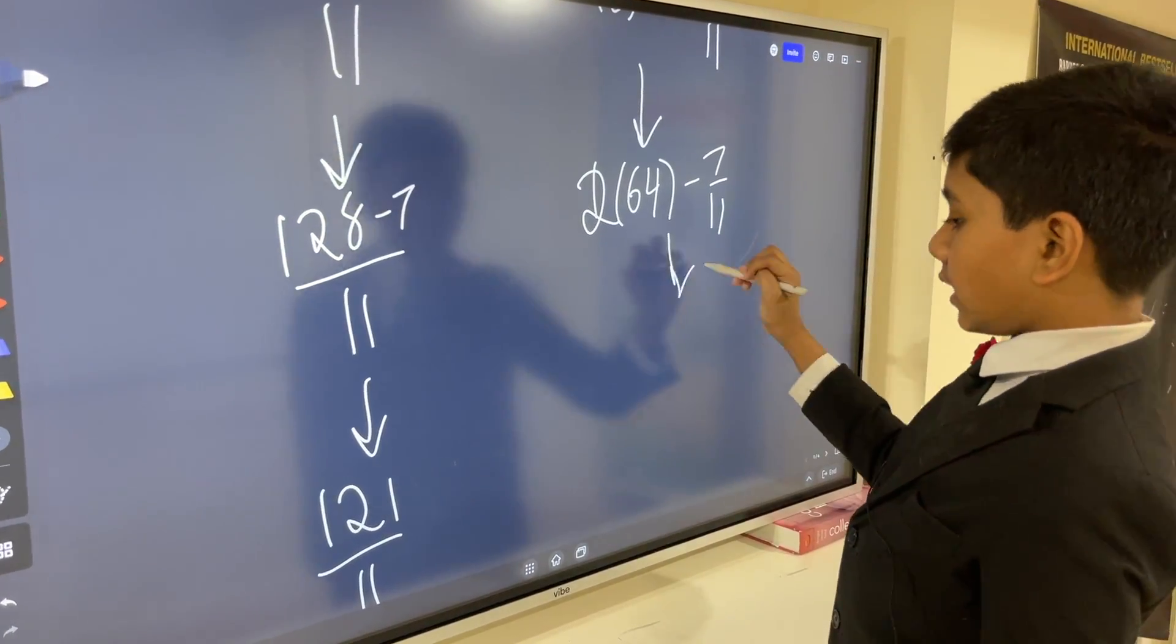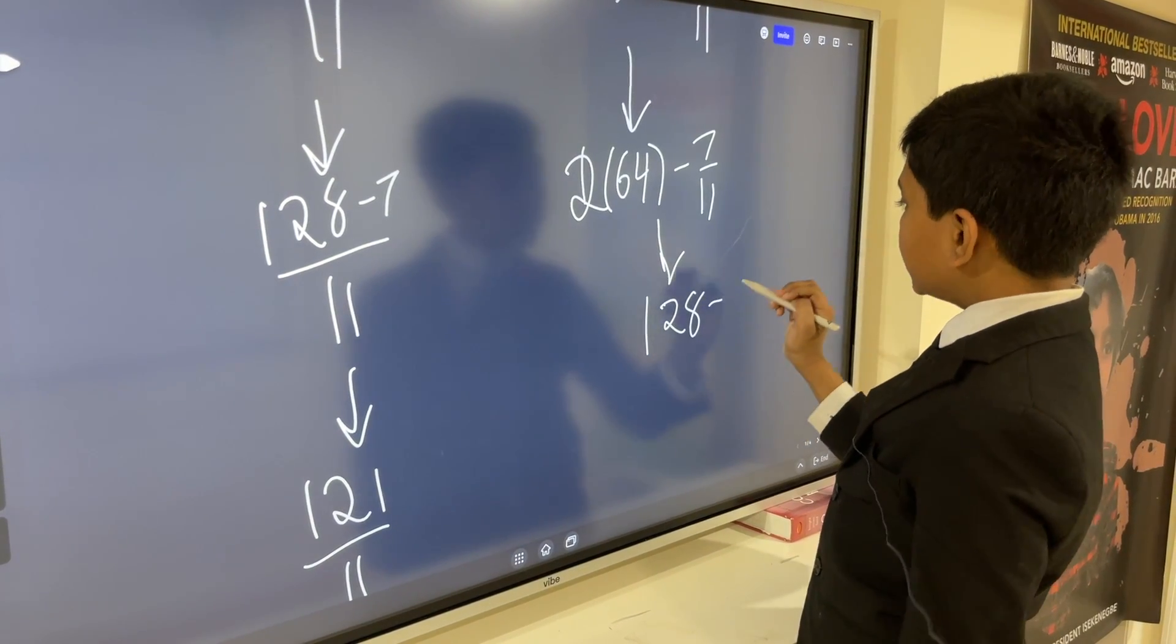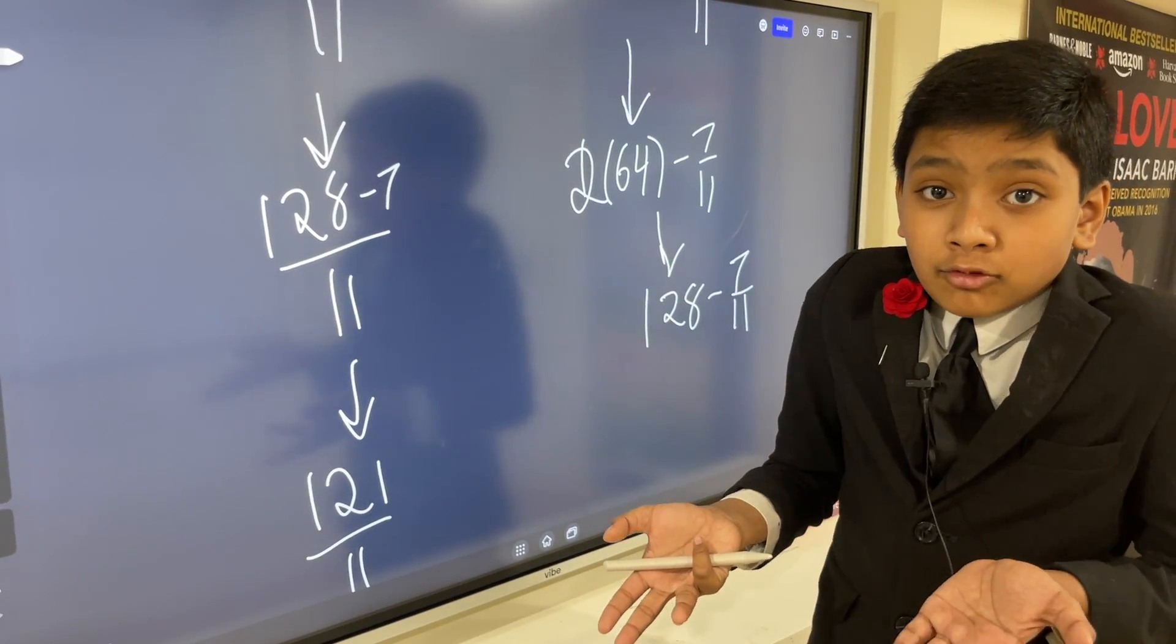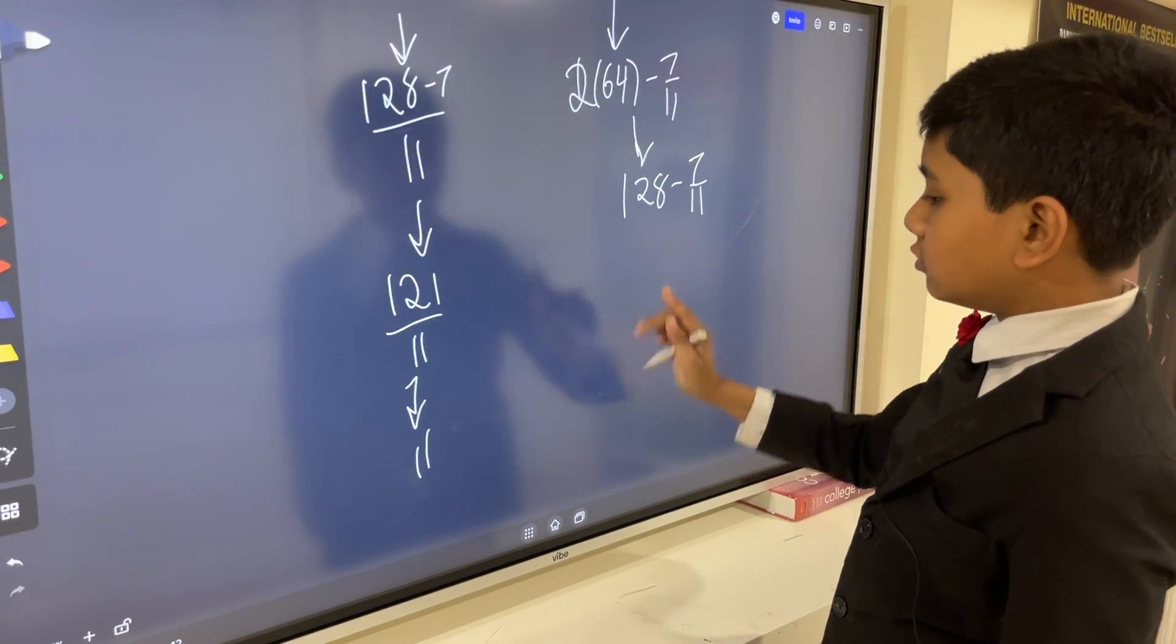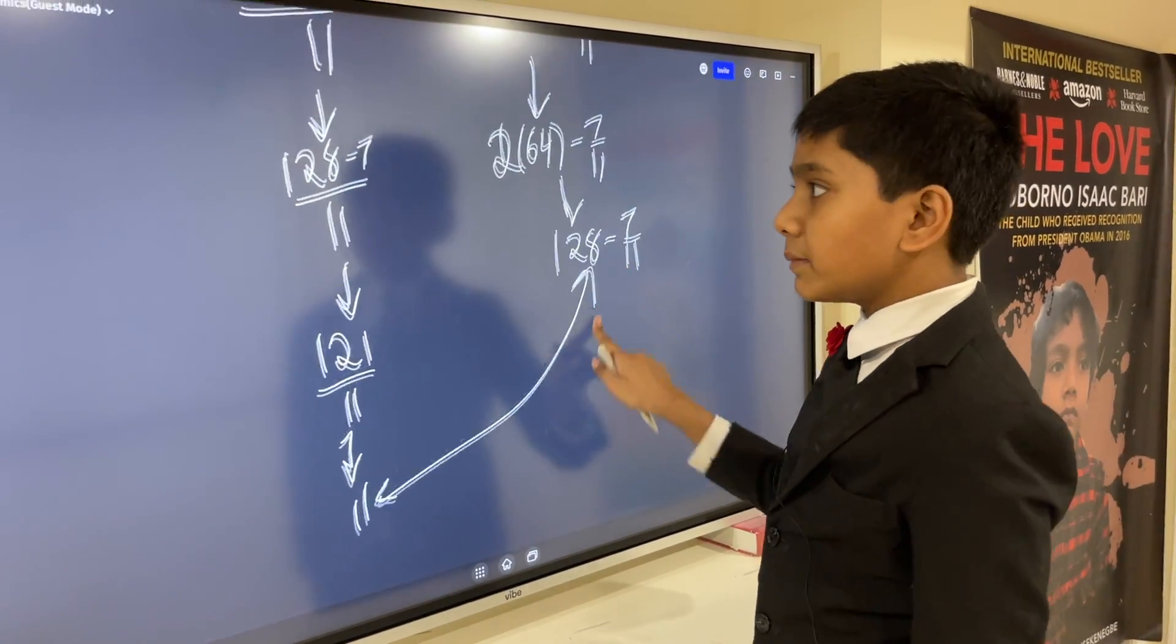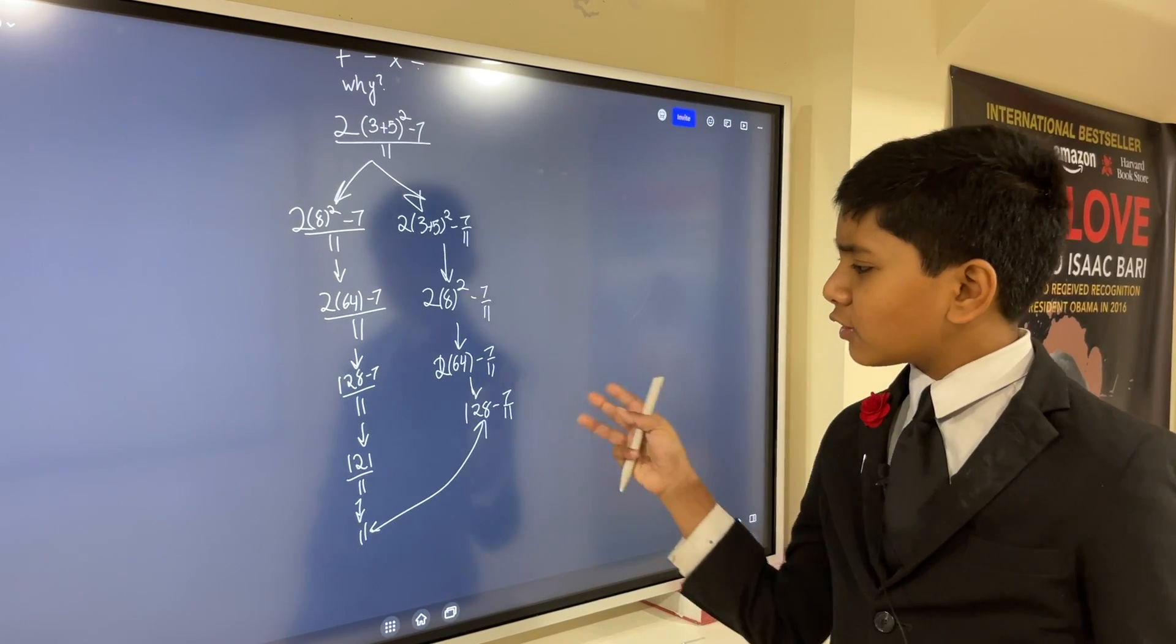Meanwhile, this guy is like, oh, this is 128 minus 7 over 11. I don't know how I'm going to do that one. And, so, these two got different answers. Obviously, these two are different. Why? Because they didn't use the same order of operations.